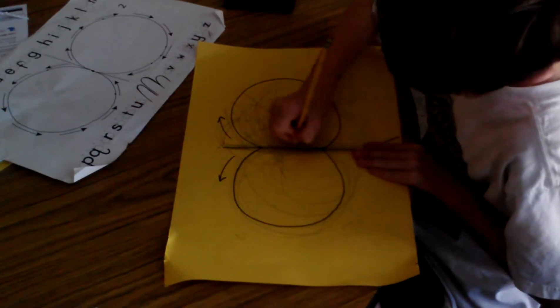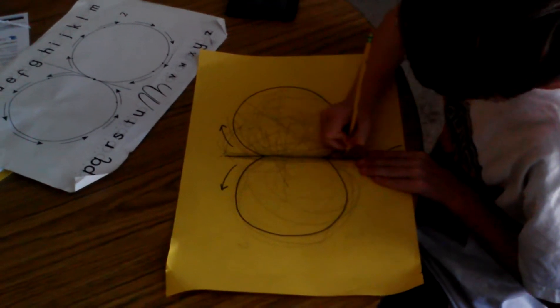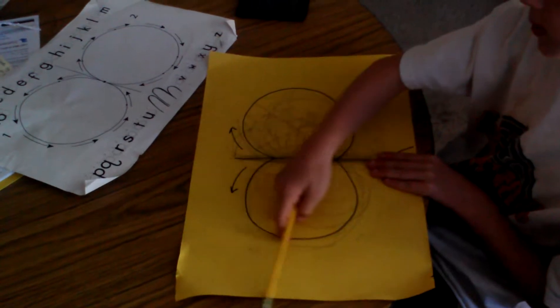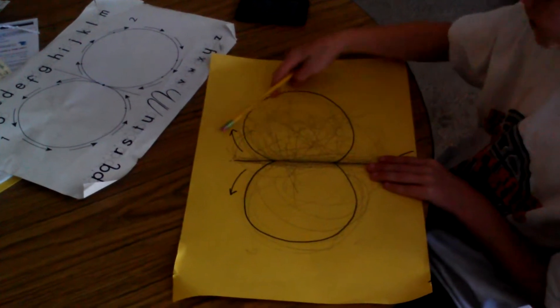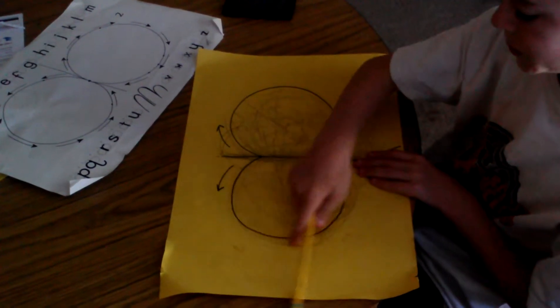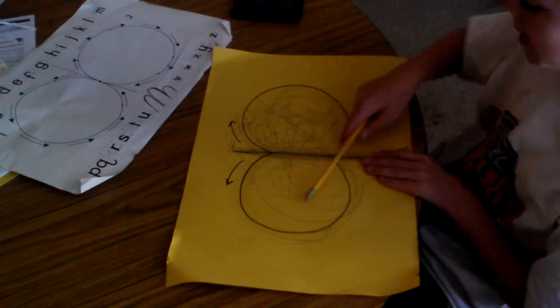Good. And so he draws the letter over the figure eight. Very good. And then he traces the figure eight pattern with his finger. Three times saying A as he does it.